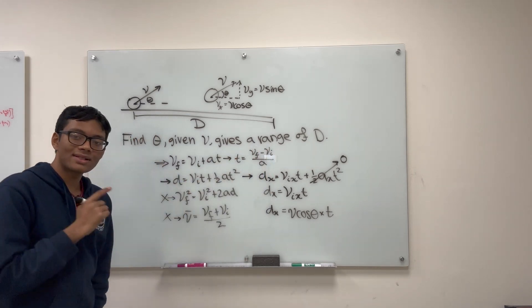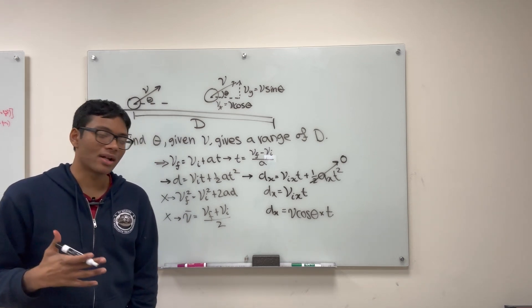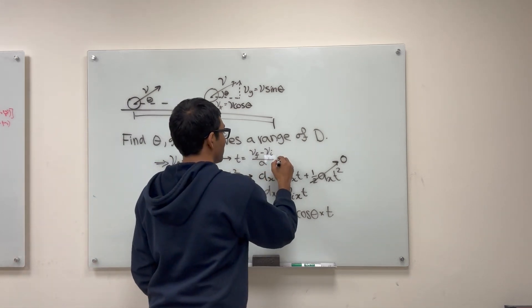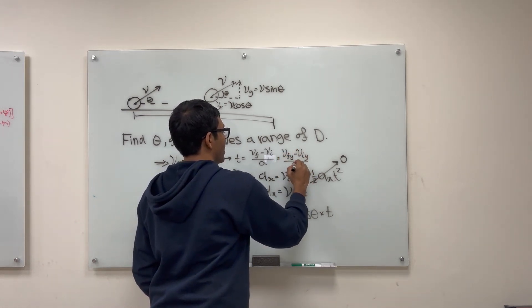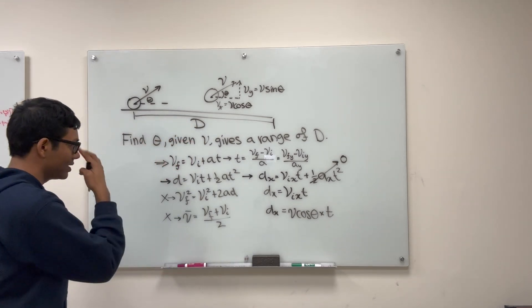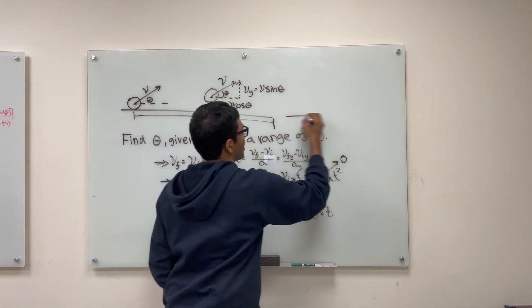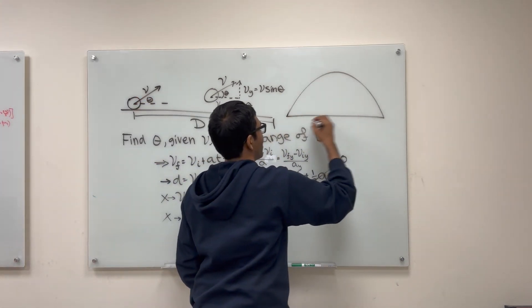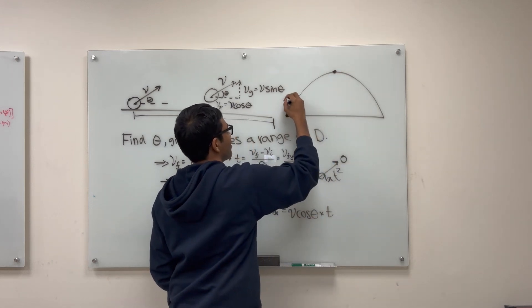So now let's apply this to the y direction because it's the y velocity that determines the airtime of the ball. So if I apply this in the y direction, I have vfy minus viy over a sub y. Now what is our initial and final point that we're going to be considering? Well, let's draw the ball's trajectory here.